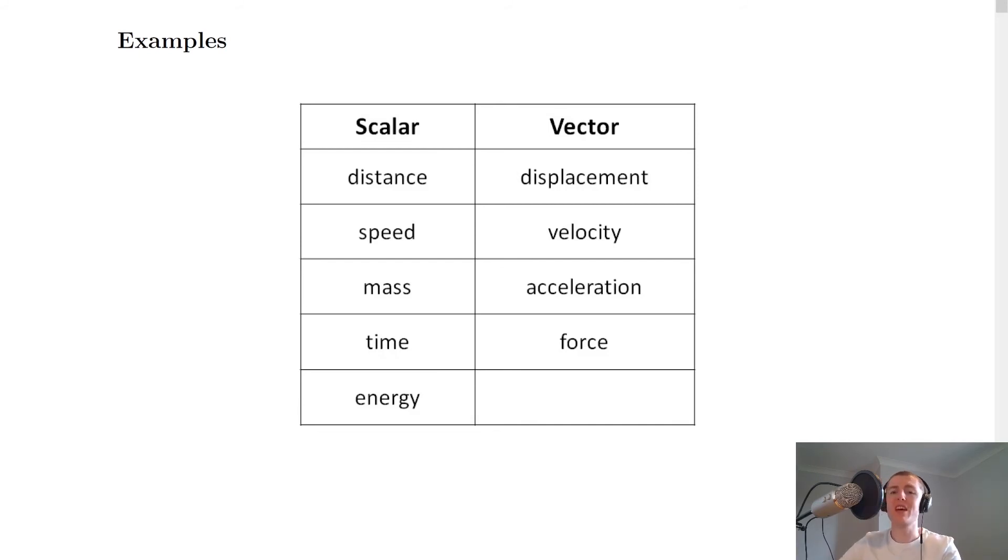So just to summarize a scalar only consists of a magnitude or a size only whereas a vector consists of both a magnitude and a direction.